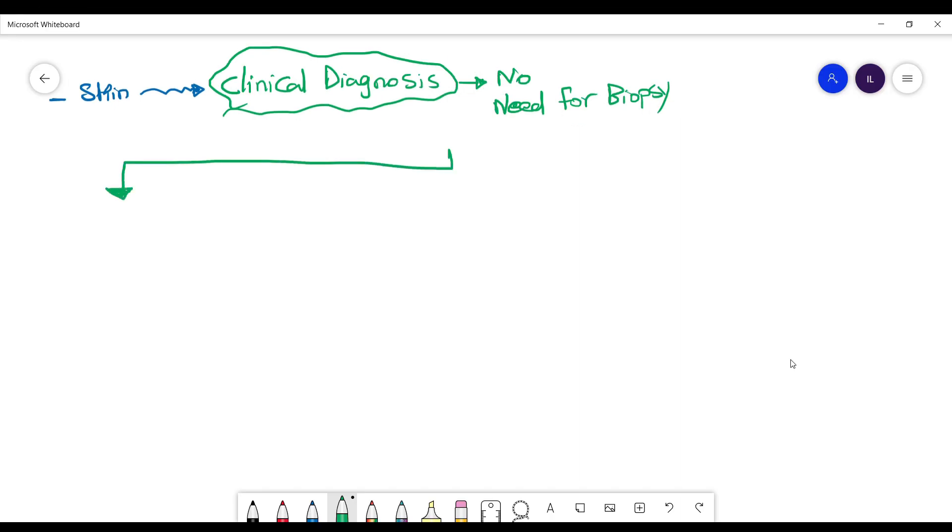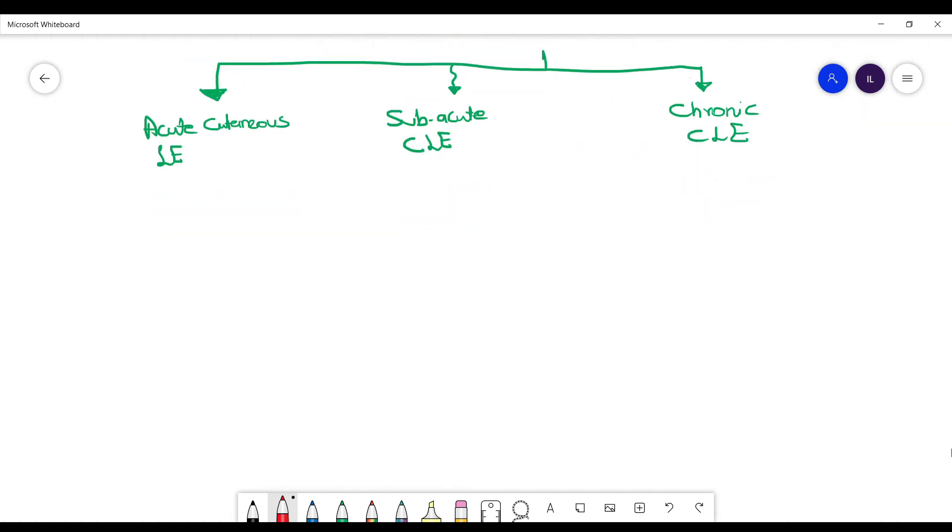We have three main categories. The first category is acute cutaneous lupus erythematosus rash, then we have the subacute cutaneous lupus and the chronic cutaneous lupus erythematosus rash. The acute cutaneous lupus erythematosus is basically the other name for malar rash.